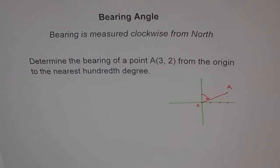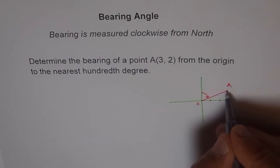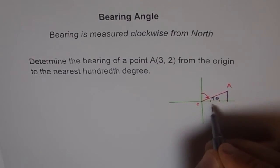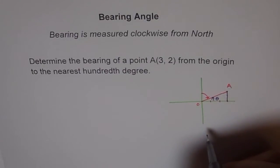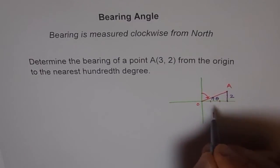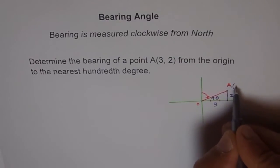Now what we can do is, we can find the angle theta from here and then we know the angle from north will be 90 minus theta. So how can you find this? We know this unit is 2 units up and this is 3 because the coordinates of A are 3,2.